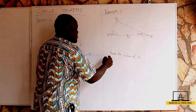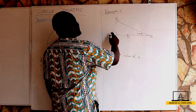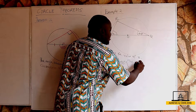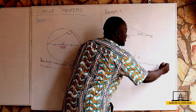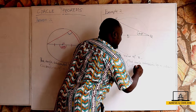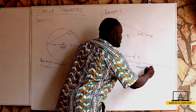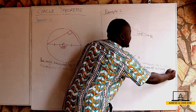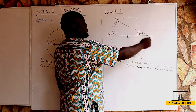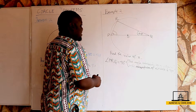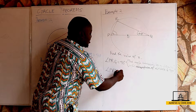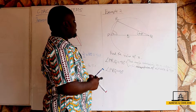From this, we can straight away tell that angle PRQ is equal to 90 degrees. Our reason being that the angle suspended by a diameter to the circumference of a circle is 90 degrees. So angle PRQ equals 90 degrees.